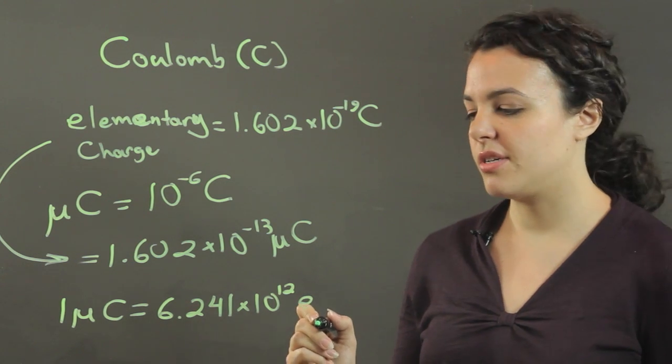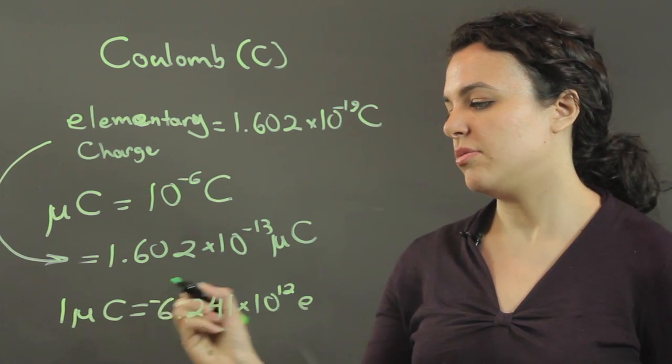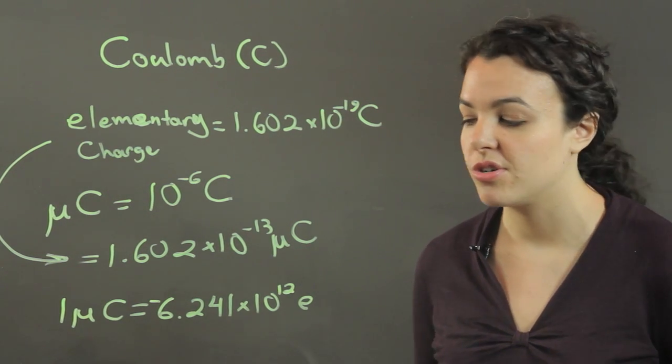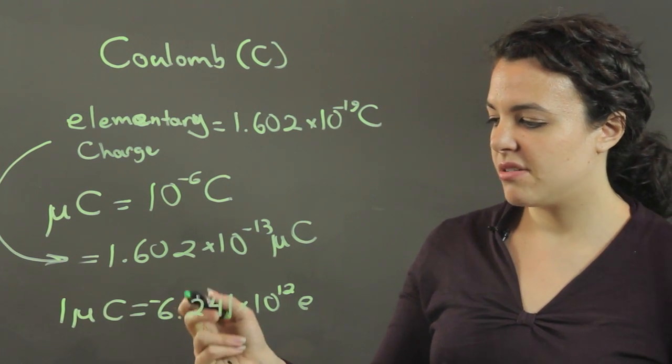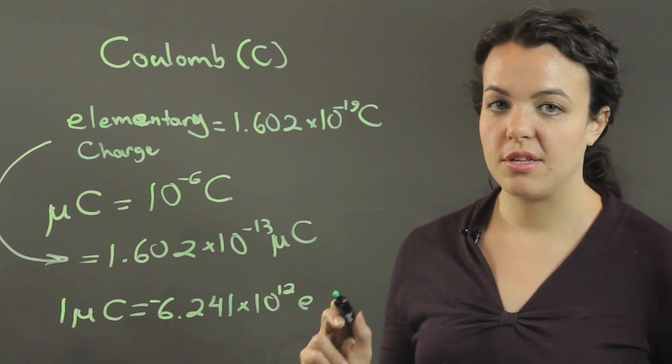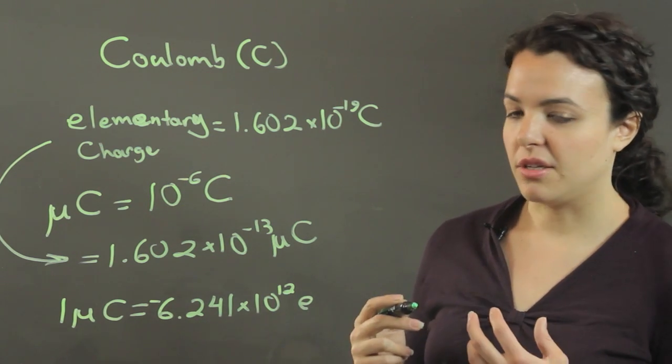Now if you're looking at electrons though, this will be negative because electrons are negatively charged. So for every microcoulomb you have, you'll get negative 6.241 times 10 to the 12th electric charge.